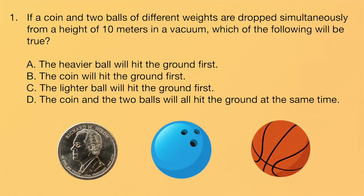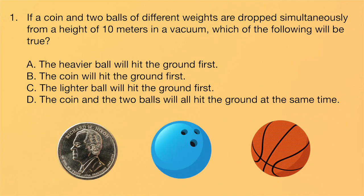Problem 1. If a coin and two balls of different weights are dropped simultaneously from a height of 10 meters in a vacuum, which of the following will be true? A. The heavier ball will hit the ground first. B. The coin will hit the ground first. C. The lighter ball will hit the ground first. Or D. The coin and the two balls will all hit the ground at the same time.